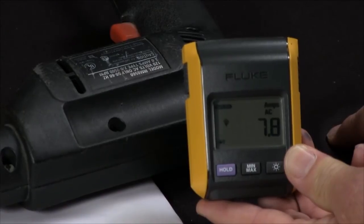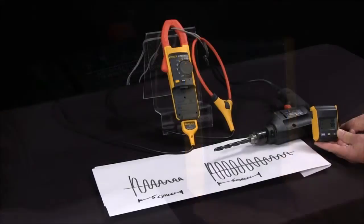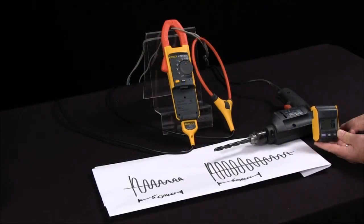So this is how we can measure inrush current with the Fluke 381 advanced remote display clamp meter.